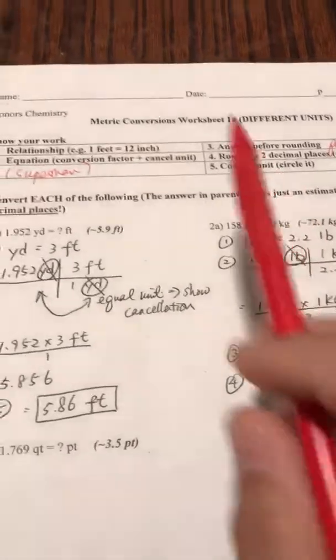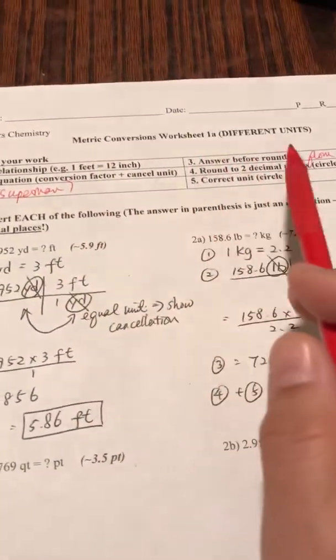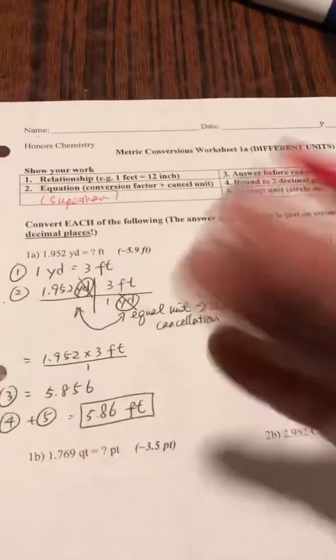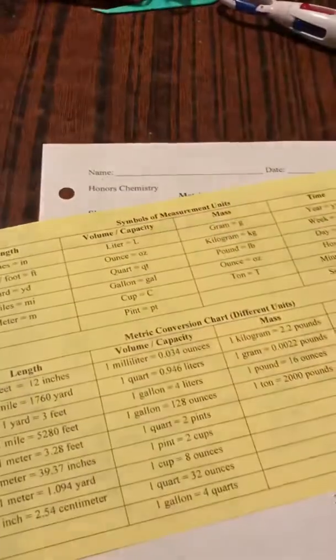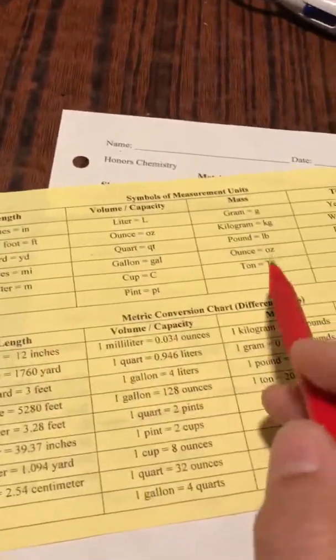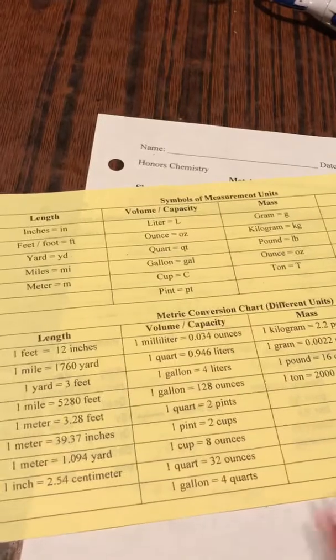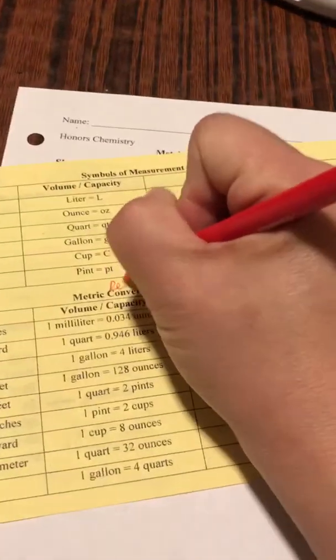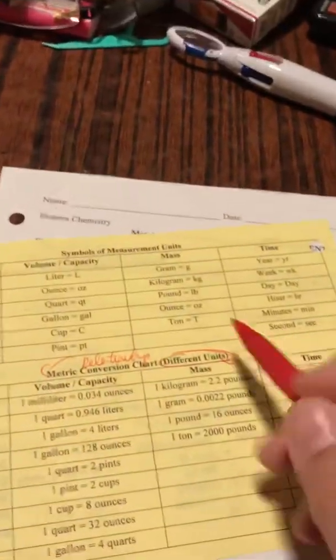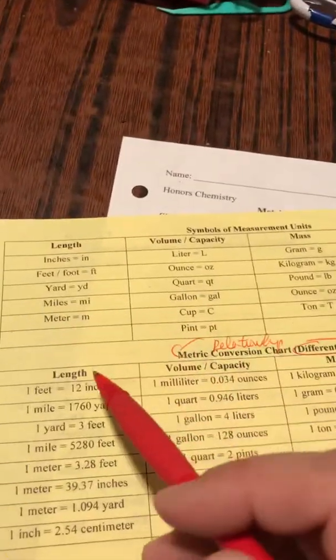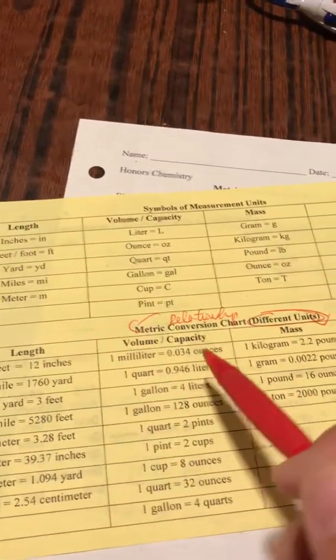Today I'm going to talk about metric conversion — changing one different unit to another. To do this, you need to get your calculator and also, very importantly, the yellow open chart. At the back of the chart there will be different units with their abbreviations. The bottom of the chart shows the relationships, and we only use this bottom table when doing different unit conversions. The relationships are categorized according to length, volume, mass, or time.